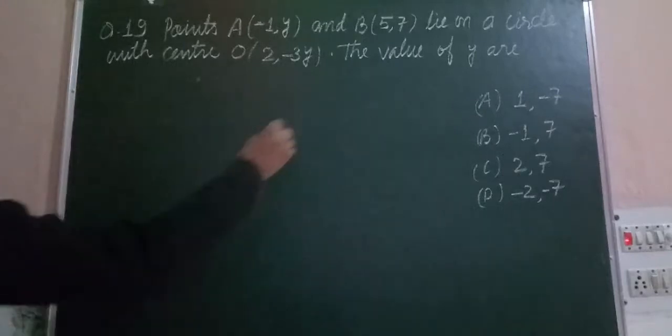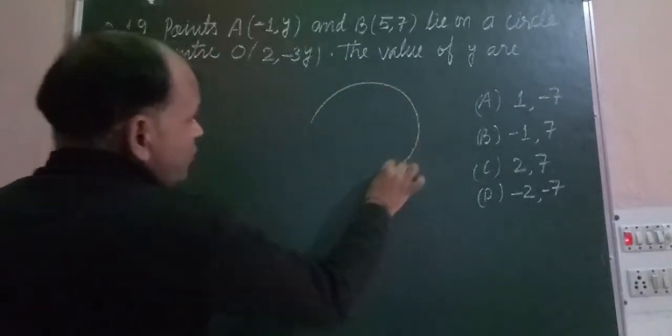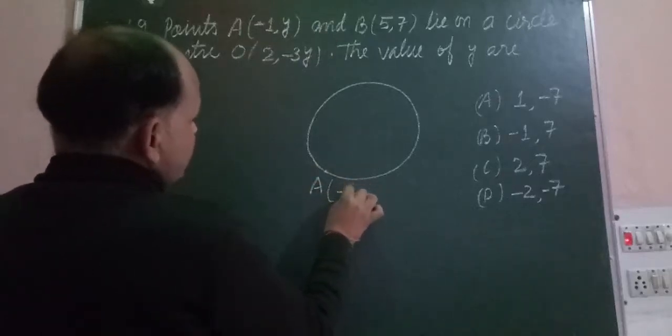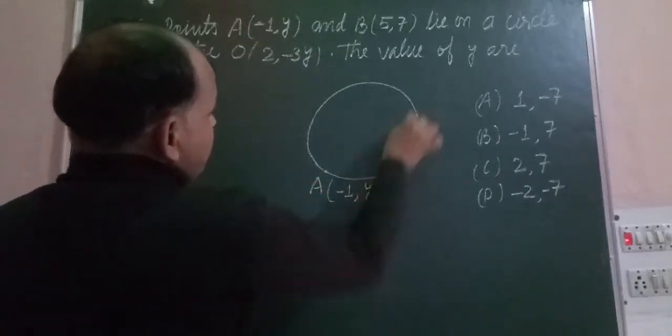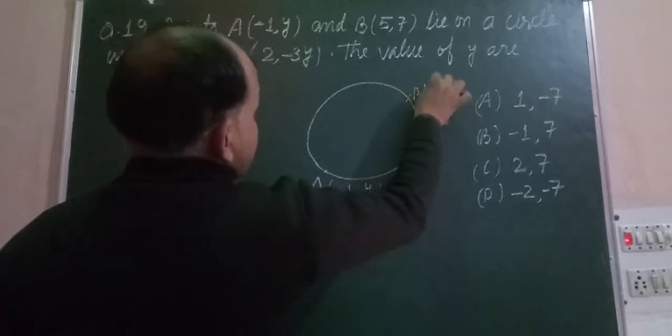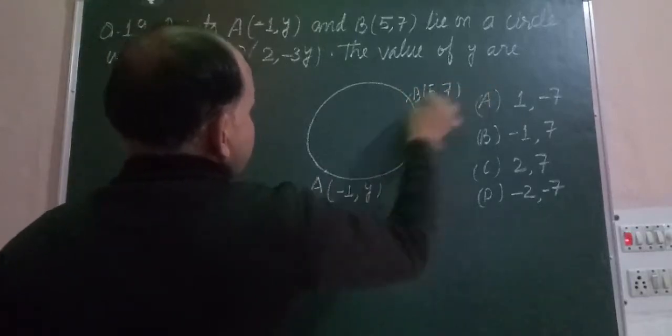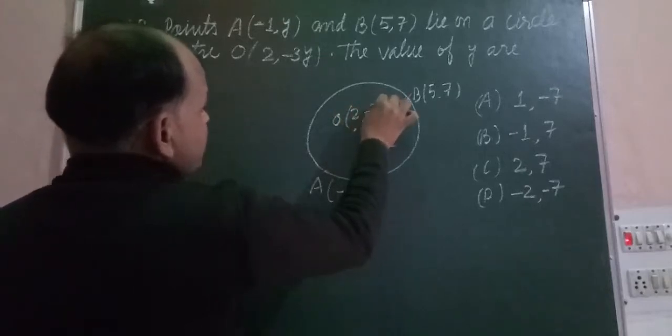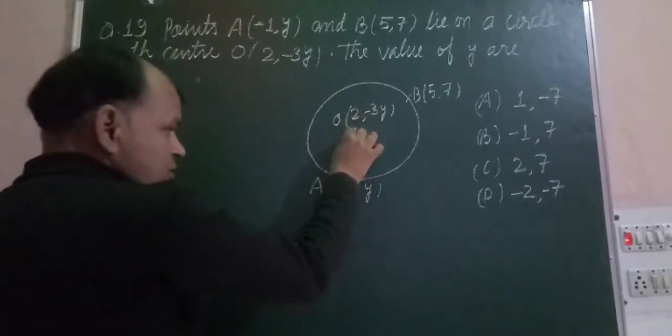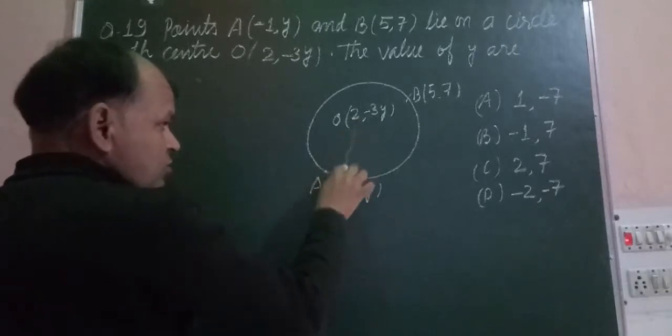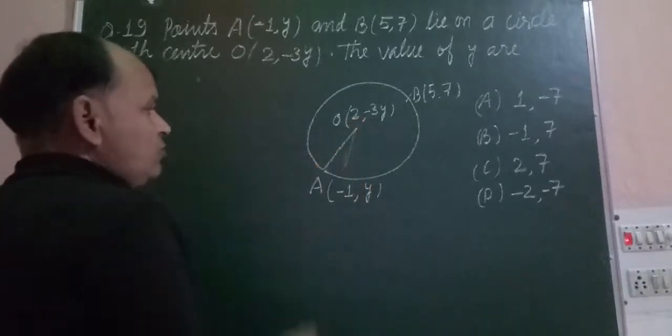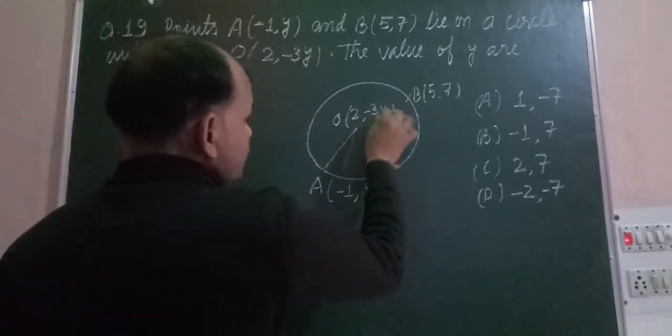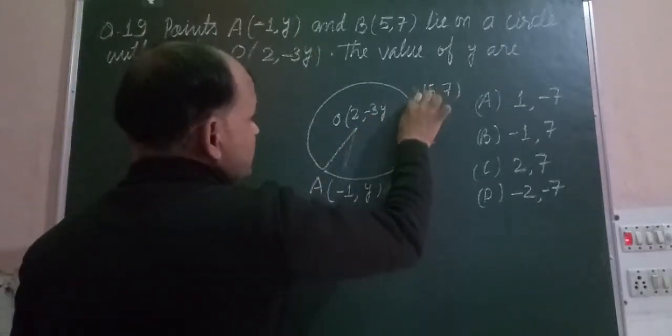Students, the question says that two points are lying on the circumference of a circle: A which is (-1, Y) and B which is (5, 7), and the center of the circle O is (2, -3). As you know, the distance from the center to any point on the circumference is called the radius.